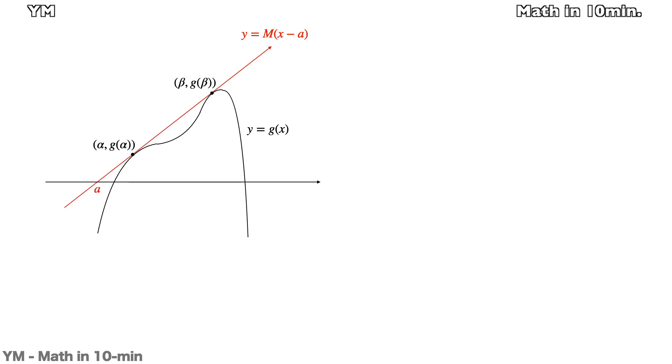The leading coefficient of g(x) is negative 1, and we still have to find the minimum of the positive value M, so that g(x) has two or fewer critical points. To do so, there must be no extrema around this area.